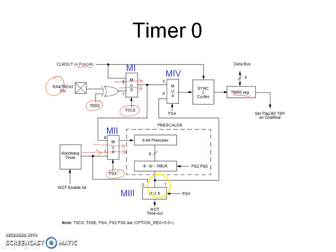Input number 0 of M3 is connected to the output of the watchdog timer, and input number 1 of M3 is connected to the output of the prescalar block. The control input of M3 is PSA. When PSA is 0, the output of M3 is the output of the watchdog timer. When PSA is 1, the output of M3 is the output of the prescalar block. Note that the output of M3 controls the watchdog timer timeout bit T0.